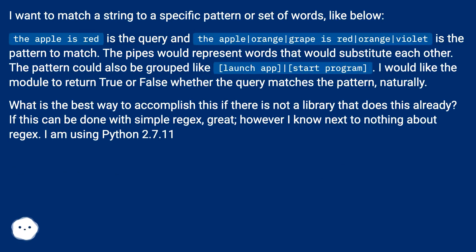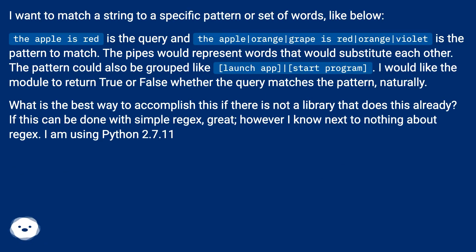The query is 'The apple is red', and the pattern to match is 'The apple|orange|grape is red|orange|violet'. The pipes represent words that would substitute each other. The pattern could also be grouped, like 'launch|start app|program'.